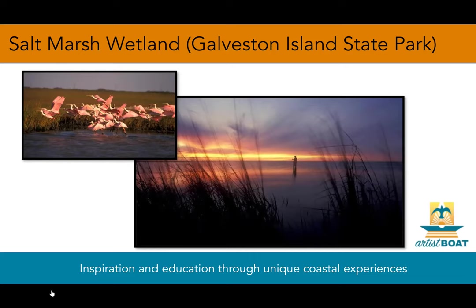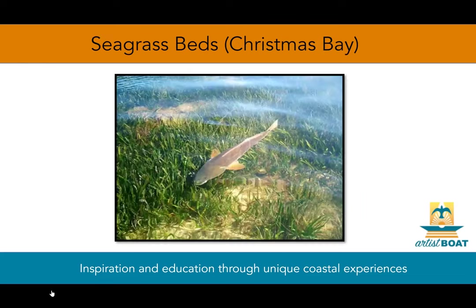A portion of Artist's Boat's Coastal Heritage Preserve is also salt marsh. In the calm shallows of the coastal bays, seagrasses grow in large beds. Turtlegrass, widgeon grass, shoal grass, and manatee grass form the core of these productive habitats. Migratory waterfowl feed on seagrasses and snails, and small young fish find food and shelter here.